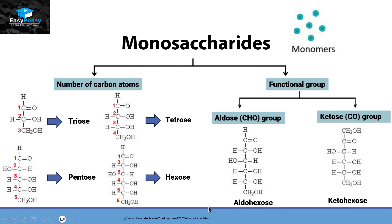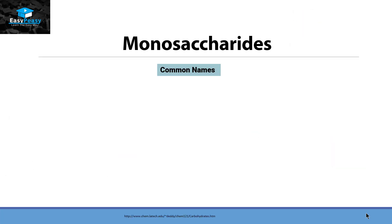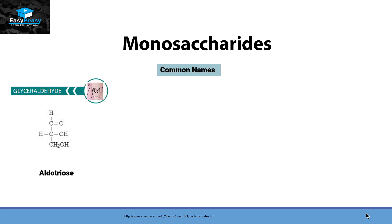In the aldose category we have a CHO functional group, and on the other side we have the ketose functional group. That is why one molecule will be called aldohexose and the other will be called ketohexose. Other than these two categories, monosaccharides can also be categorized with common names. For example, this three-carbon aldotriose is also called glyceraldehyde.